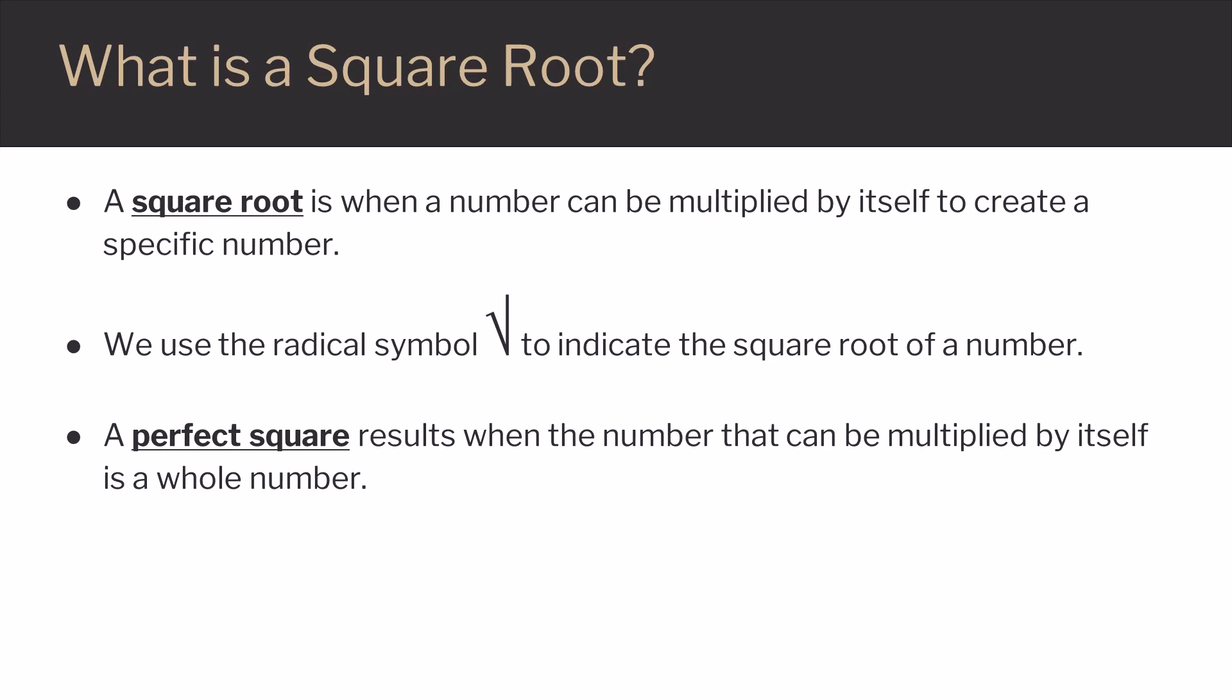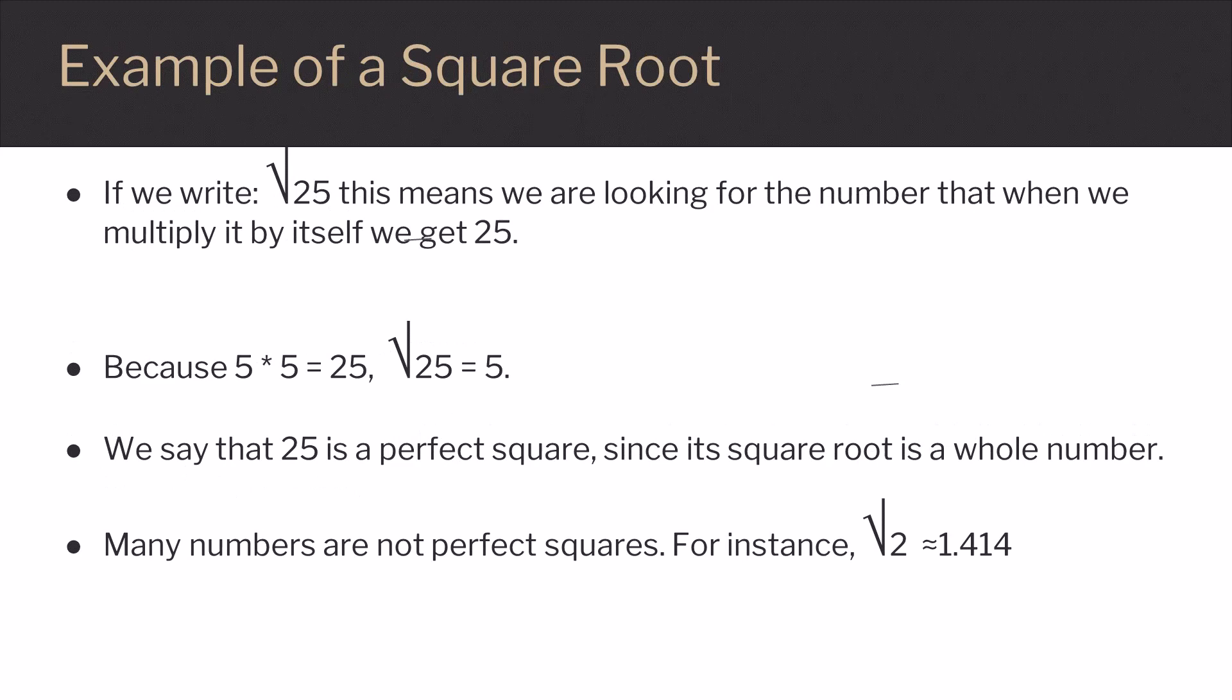Let's first take a look at an example of a square root. If we write the square root of 25, this means we're looking for the number that when we multiply it by itself, we get 25.